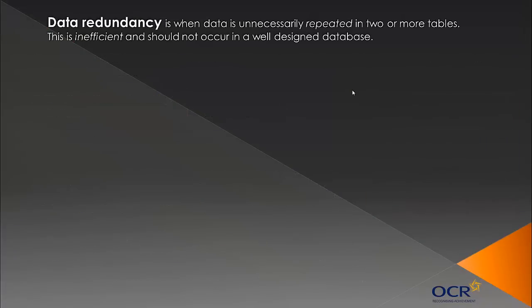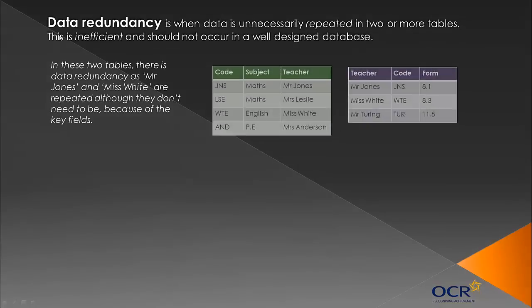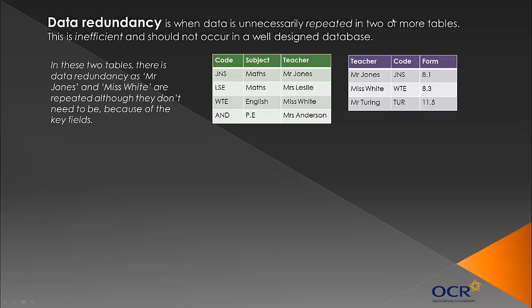Let's move on to looking at something called data redundancy. This is when data is unnecessarily repeated in two or more tables - data is repeated where it doesn't need to be, and clearly this is inefficient. Data redundancy should not occur in a well-designed database. Looking at this example with two tables in a relational database linked by the code key field, Mr. Jones and Ms. White are repeated in both tables. They don't need to be repeated twice because of key fields - it's wasting storage space.